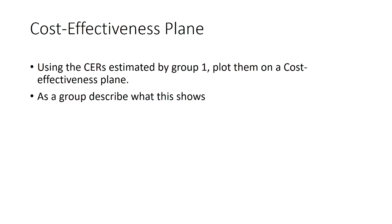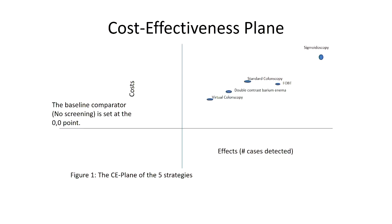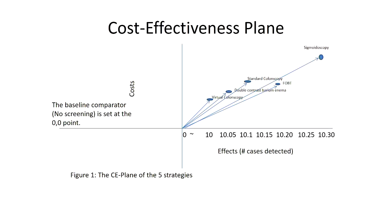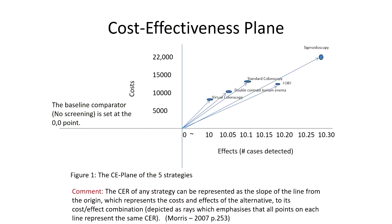The second group takes the information from the first group and plots it onto a cost-effectiveness plane. They're given the axes and just need to fill in the information from the previous group's results. This gives them an understanding of what they're doing visually.